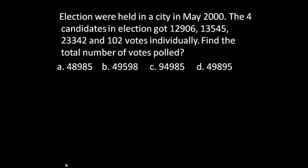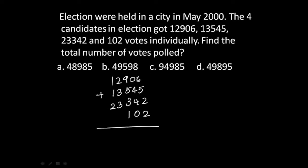Next question: Elections were held in a city in May 2000. Four candidates got 12,906 | 13,545 | 23,342 | and 1,04,102 votes individually. Find the total number of votes polled. Adding all the votes: starting from the units digit, 6+5+2+2 = 15, write 5 carry 1.